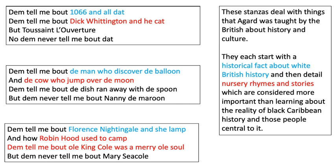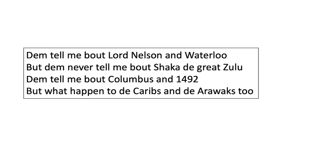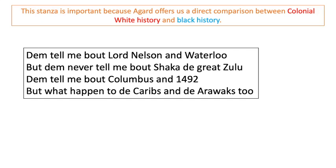And within his own black Caribbean culture, the repetition of 'them tell me' is reinforced throughout the poem, just to show us as the reader the real control that the British have over Agard and his ability to understand himself.